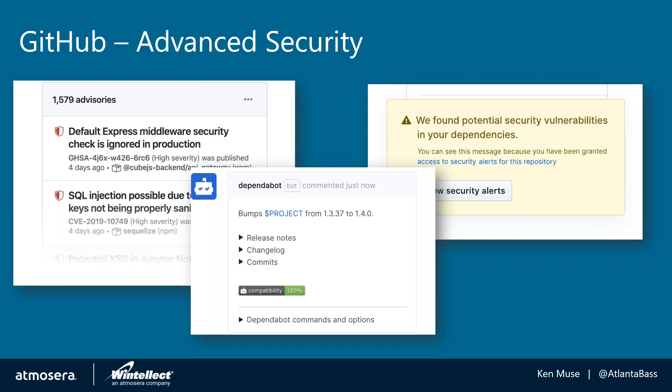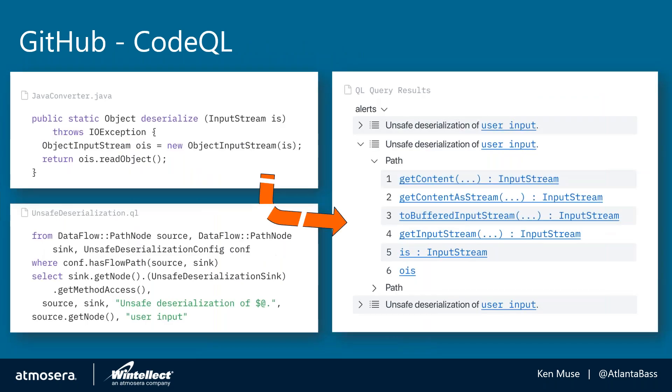An additional part of the overall Advanced Security package goes beyond looking at just your software supply chain — it actually looks at your code to identify potential exploits, allowing you to take potential exploit patterns that security researchers have identified, manage that as code, and analyze your code base to examine those exploits. That functionality is called CodeQL.